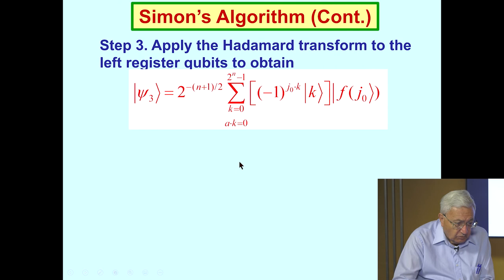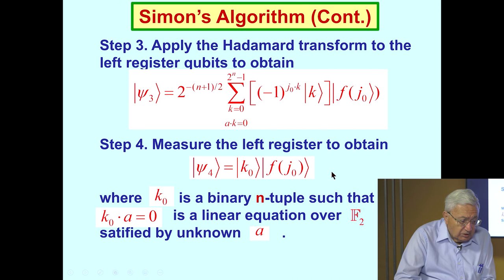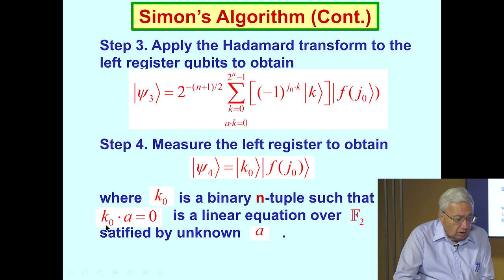Now, we've just applied the Hadamard transform, and so the expression after that observation simplifies to the following. The sum is now over all integers k, whose inner product as vectors with the unknown period A is 0. So, next, in step 4, we'll measure the left register to obtain a state of this form, where k0 is now a binary n-tuple, such that its inner product with the unknown period A is equal to 0. We have extracted some information with this measurement about the unknown period A.